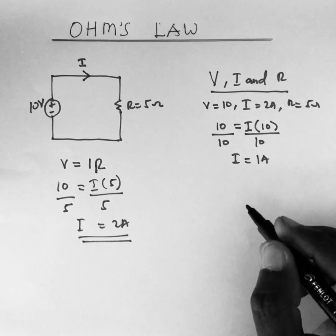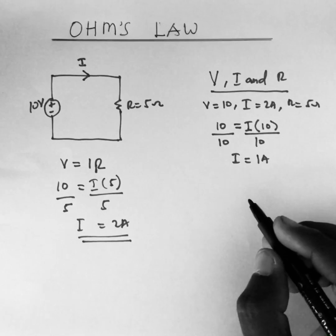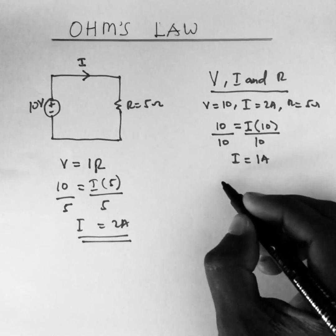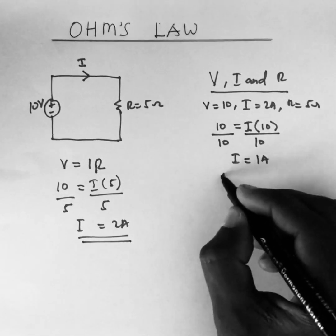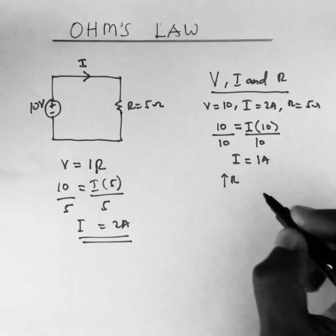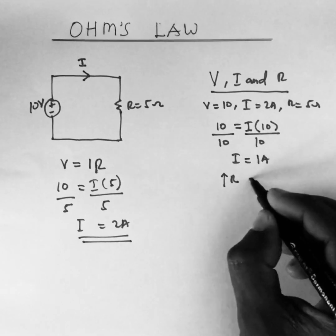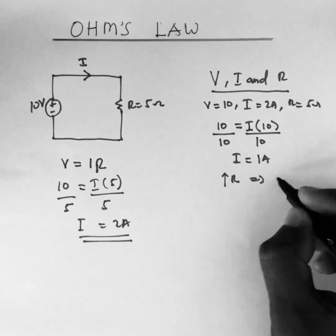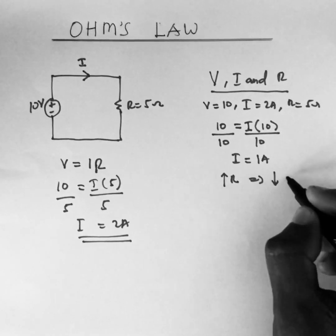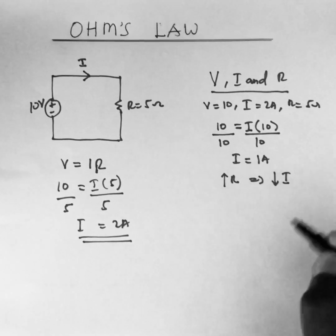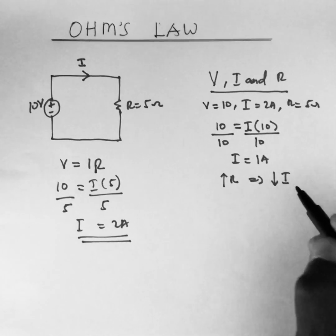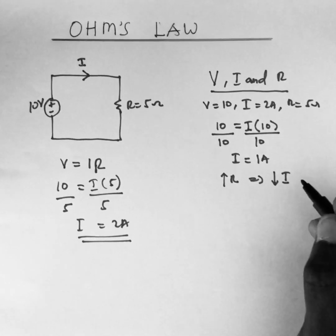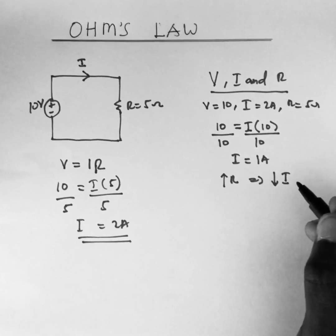We notice here that at constant v, an increase in the resistance results in a decrease in the current. So we can conclude that r and i are inversely related — they are inversely proportional to each other.